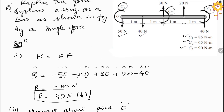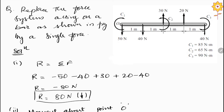Looking at the diagram, we take moments about point O. At point O itself, the 50 N force acts but with zero distance, so its moment is zero — it does not appear in the equation. For the 40 N force, it acts downward and creates a clockwise rotation about O, so we take it as negative. Its distance from O is 1 meter.